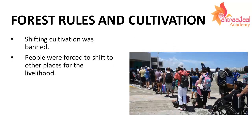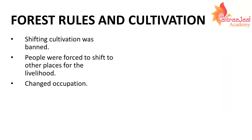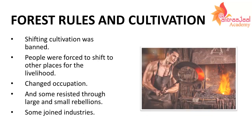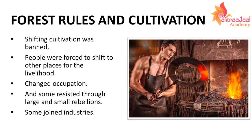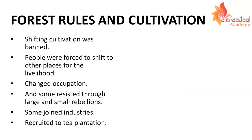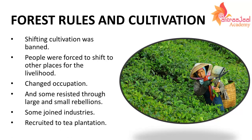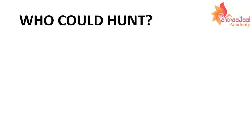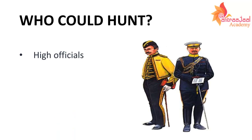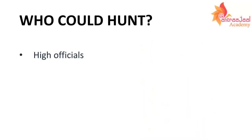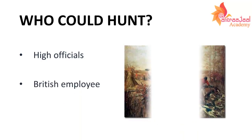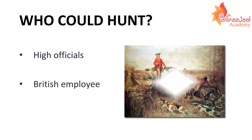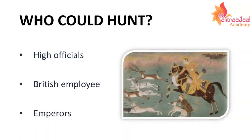People had to leave their homes and move to other places. Some people took up occupations locally and got involved in rebellion. Those who stayed joined small and large industries to support their households, and some joined tea plantations. Hunting was banned for common villagers, but some people were still allowed to hunt — such as high officials, British employees, and emperors who were under British rule at that time.